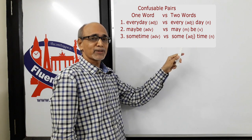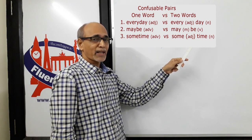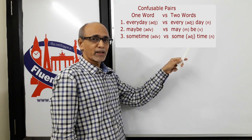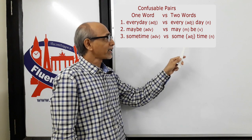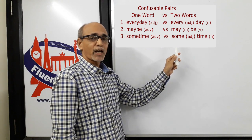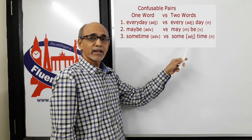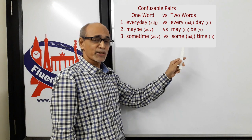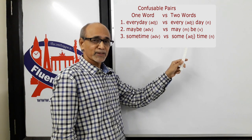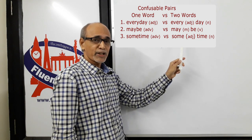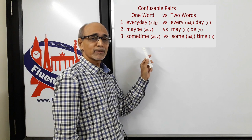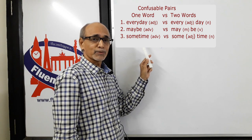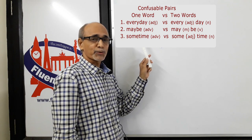For example, you can say 'he comes here every day' or 'I read books every day.' Here it means each day — you are emphasizing each day. Whereas 'everyday' as one word is an adjective, as in 'that's an everyday issue.'